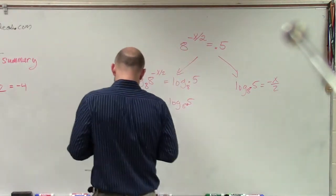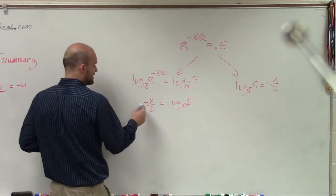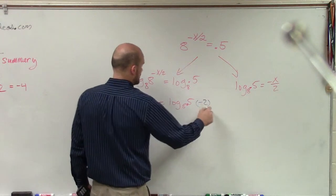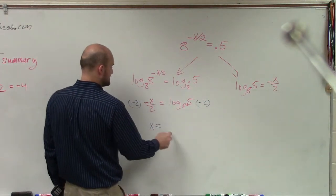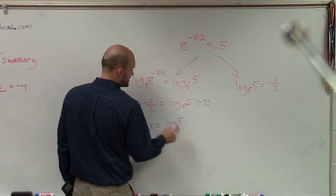So to do that, I'm just going to work on it. I can get rid of this divided by negative 2x by multiplying by negative 2 on both sides. Therefore, my answer is going to be x equals log base 5 over log.